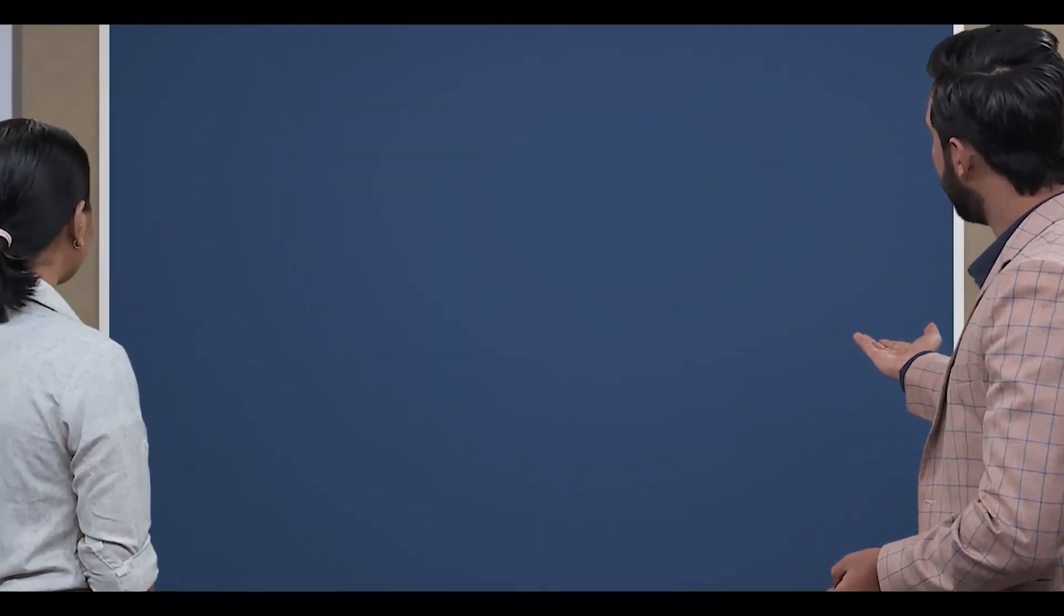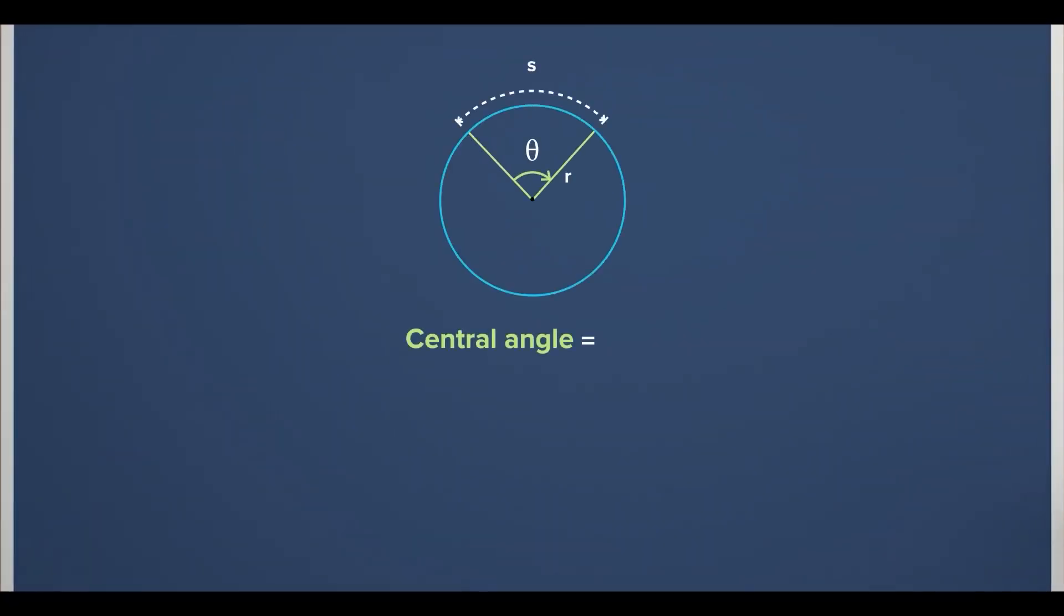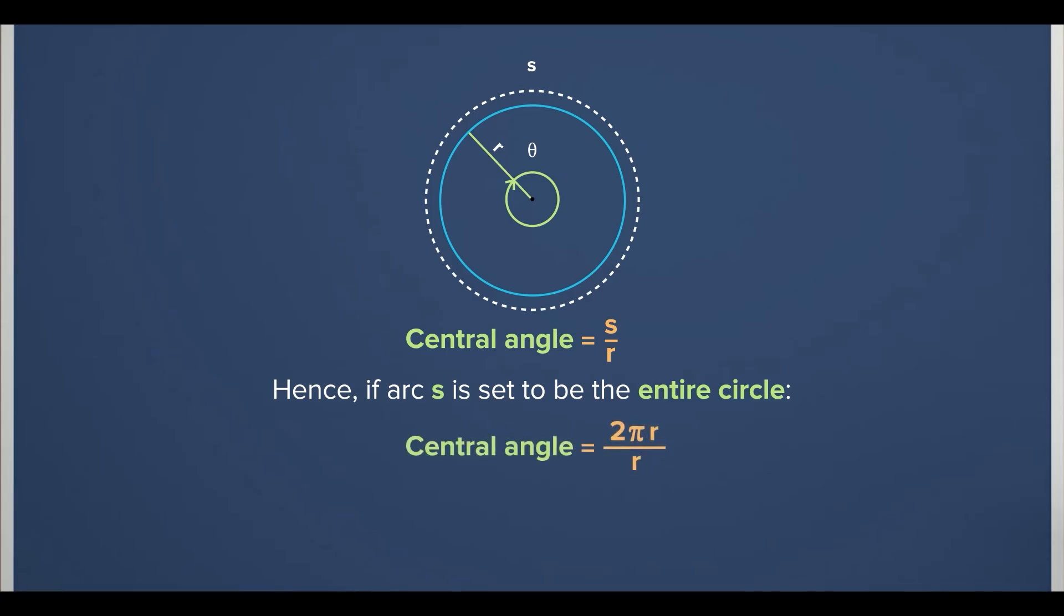Indeed, they are related. Look at this diagram. You see, theta is measured by the length of an arc S divided by the radius. Hence, if we set arc S to be the entire circle, then we get theta equals 2 pi r divided by r, which is 2 pi. That's why 360 degrees converts to 2 pi radians. Whoa, that's so cool! I didn't know it works that way.